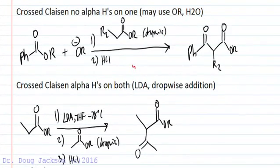However, in a cross Claisen where you have two different esters that are reacting, we simplify things when we have only one of the two has alpha hydrogens. So the one we want to form the enolate has alpha hydrogens but the electrophile does not.